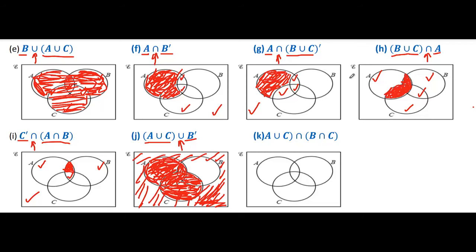Now identify A complement, which means outside of A. This is the region A, and these regions are outside of A. Now identify C — C is here, C is here, and C is here as well. Now there is intersection between them — we shade the region where double ticks are present.